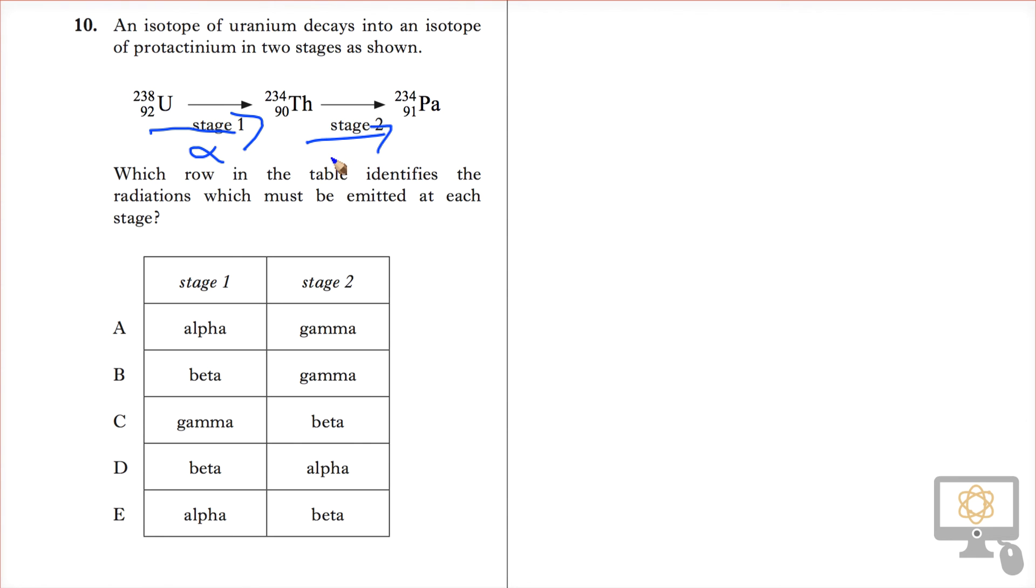In stage two, the atomic number rises by one, which must be beta decay.